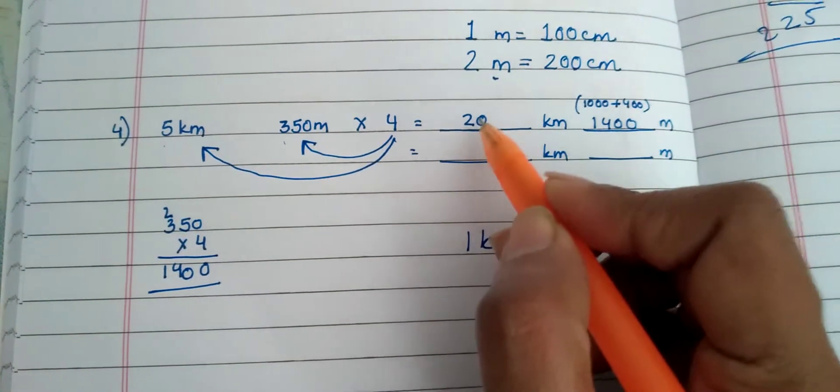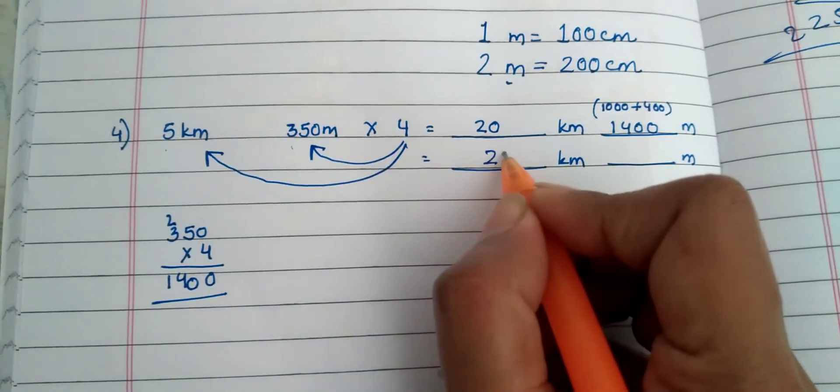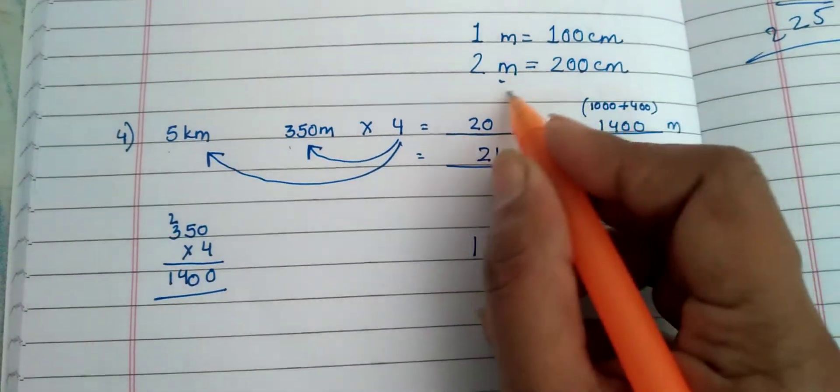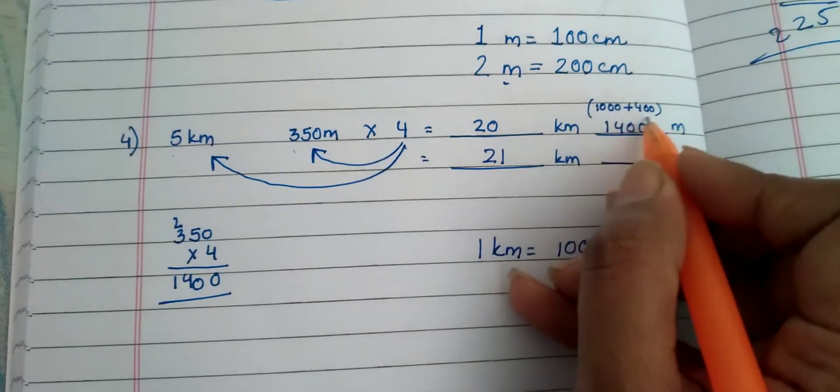So one kilometer will be added to 20, it will become 21 kilometer. 1000 went there, now what is left? 400. We'll write here 400.